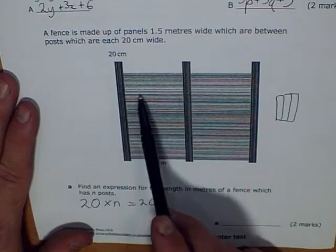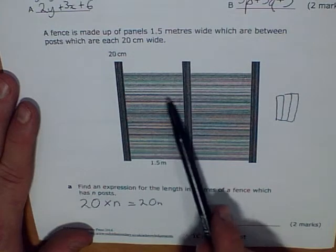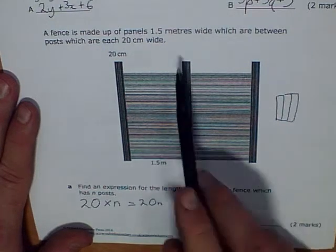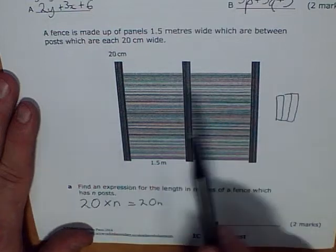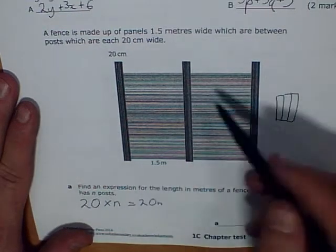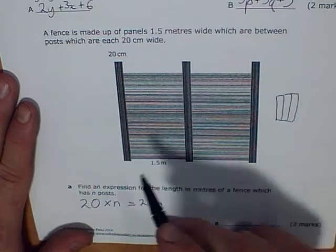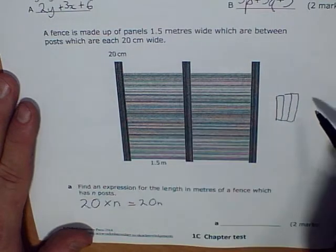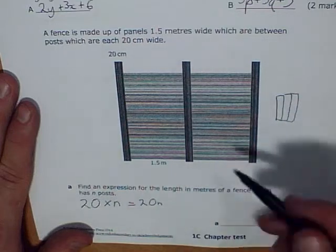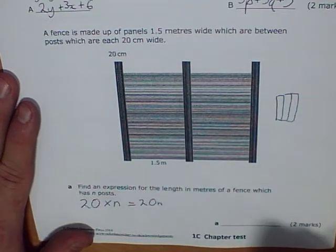1.5 metres wide, that's the number of panels I've got. Let's have a look. If I've got three posts, then I'll have two panels. If I have two posts, I'll have one panel. If I had four posts, I'd have three panels. Five, I'd have four. In fact, I've always got one fewer panel than I have posts.